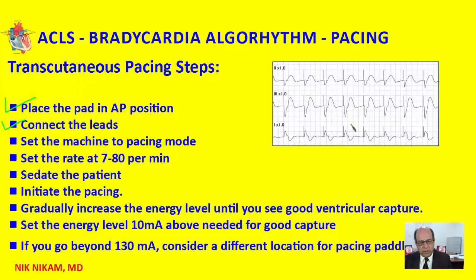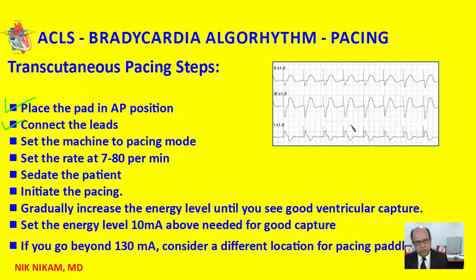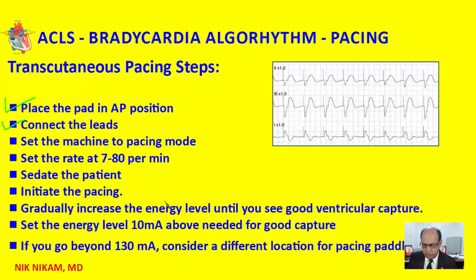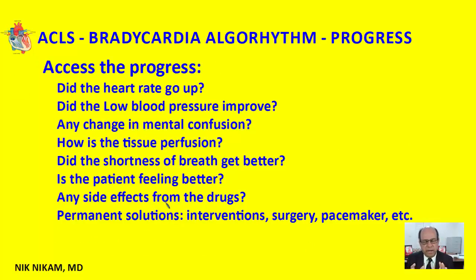Set the energy level approximately 10 milliamps above the level needed to get good ventricular capture. If you go beyond 130 milliamps, reposition the electrodes and see if you can get a better response. If that doesn't work, a transvenous pacemaker may be indicated, because beyond 130 milliamps the patient will be extremely uncomfortable with the electrical energy going through the body with every beat.